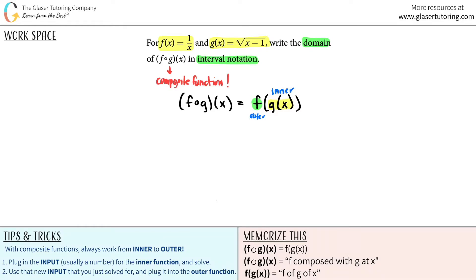But for this case, they just told us g of x. So one, I'm just going to say what g of x was. g of x was the square root of x minus one.